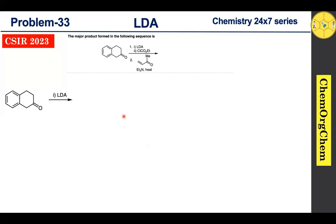The first reaction involves LDA as one of the reagents. We have already discussed LDA in previous videos — you can find the link in the description box below. As a recall, LDA, or lithium diisopropyl amide, is a non-nucleophilic, sterically hindered, strong base that readily abstracts protons from acidic positions. LDA is useful for the generation of enolate ions by taking protons from the less hindered site.